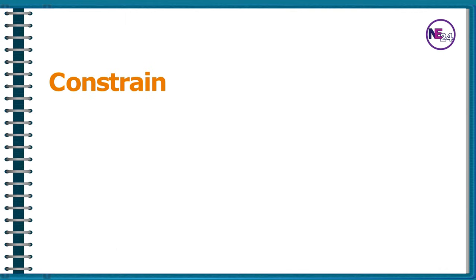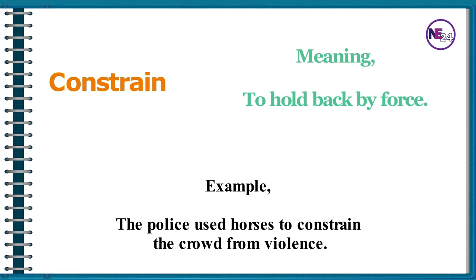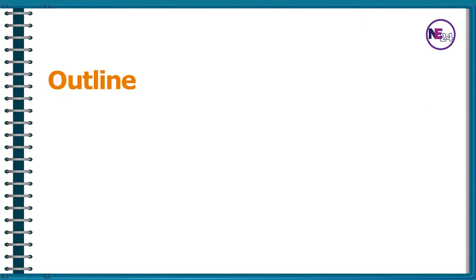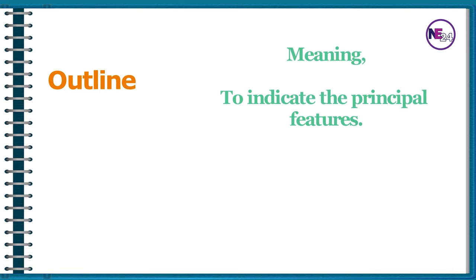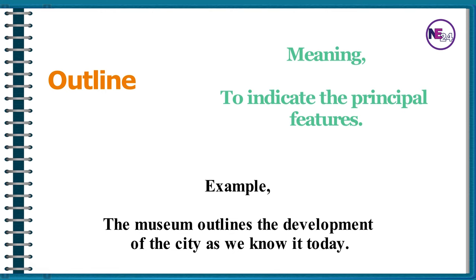Constrain: to hold back by force. The police used horses to constrain the crowd from violence. Outline: to indicate the principal features. The museum outlines the development of the city as we know it today.